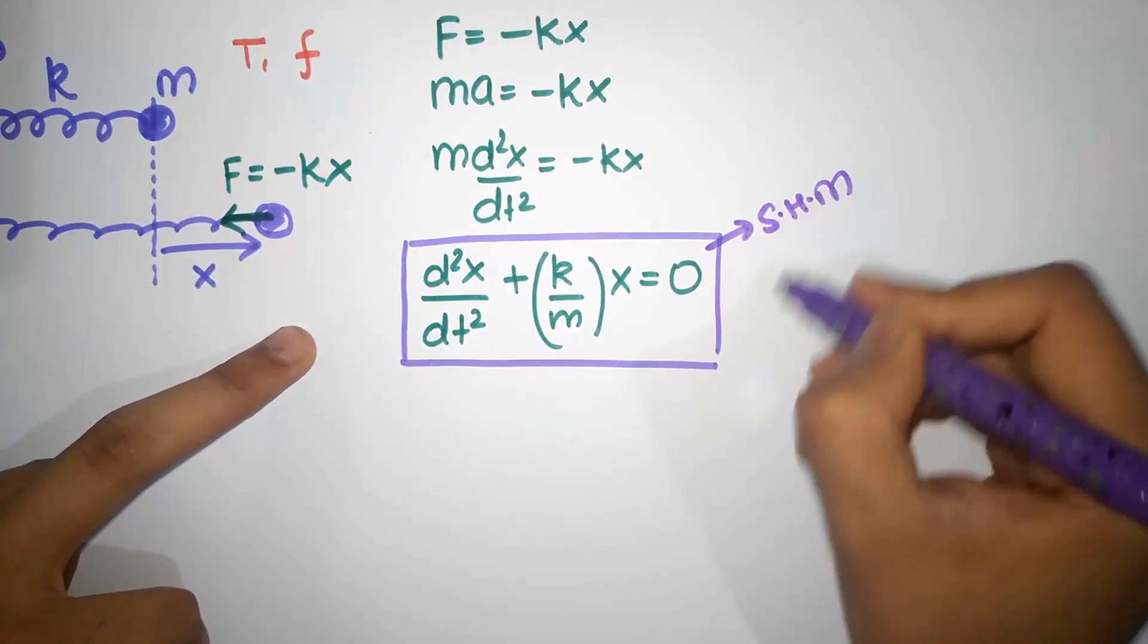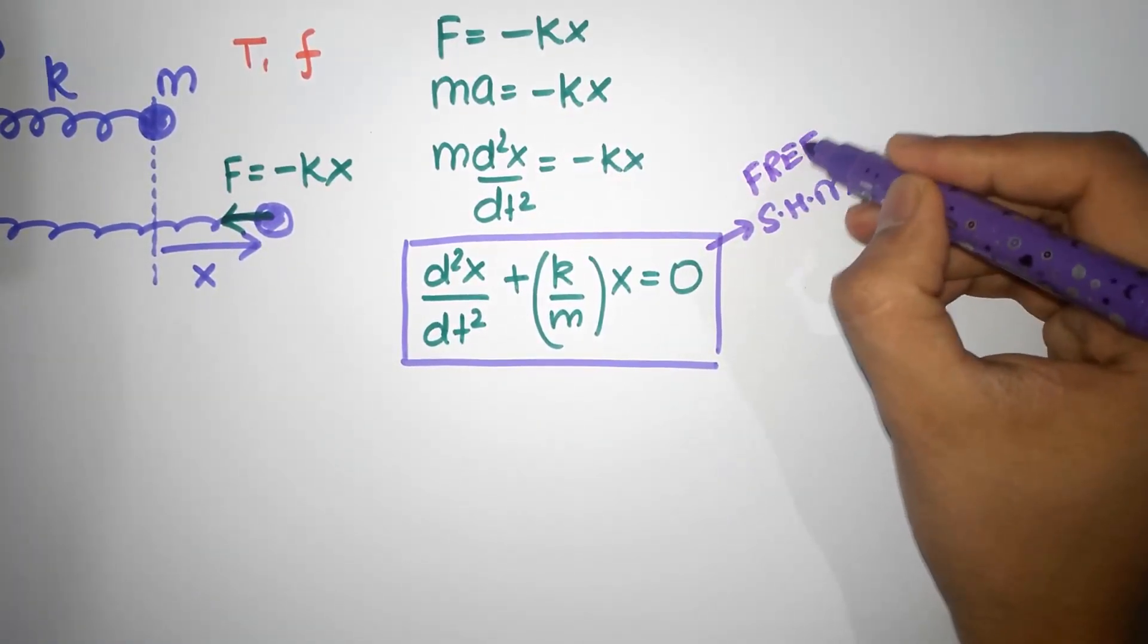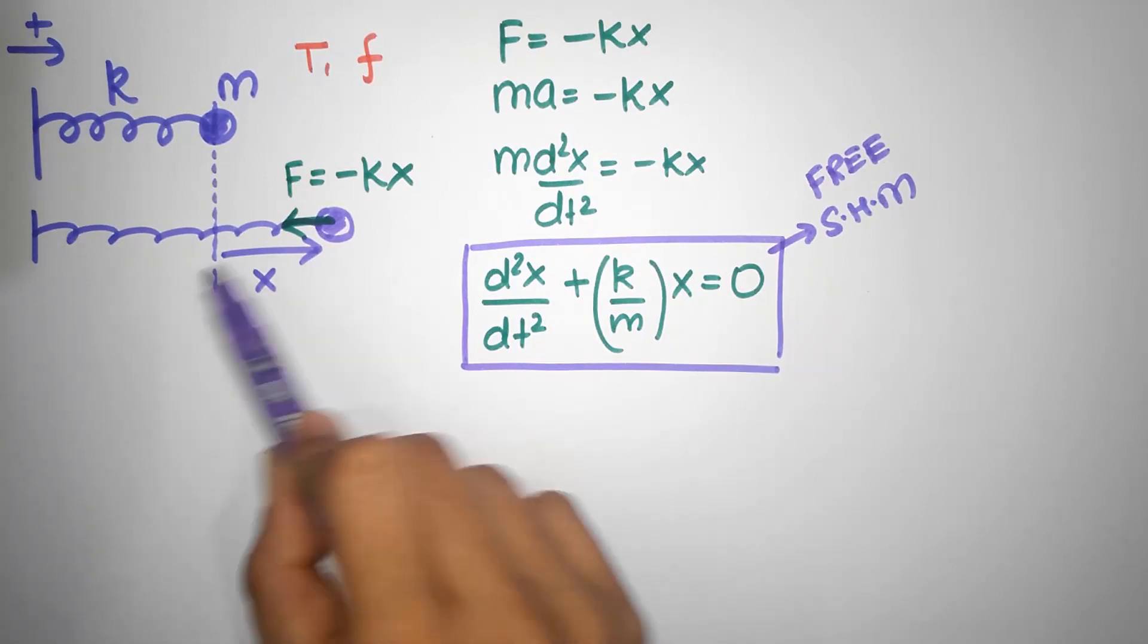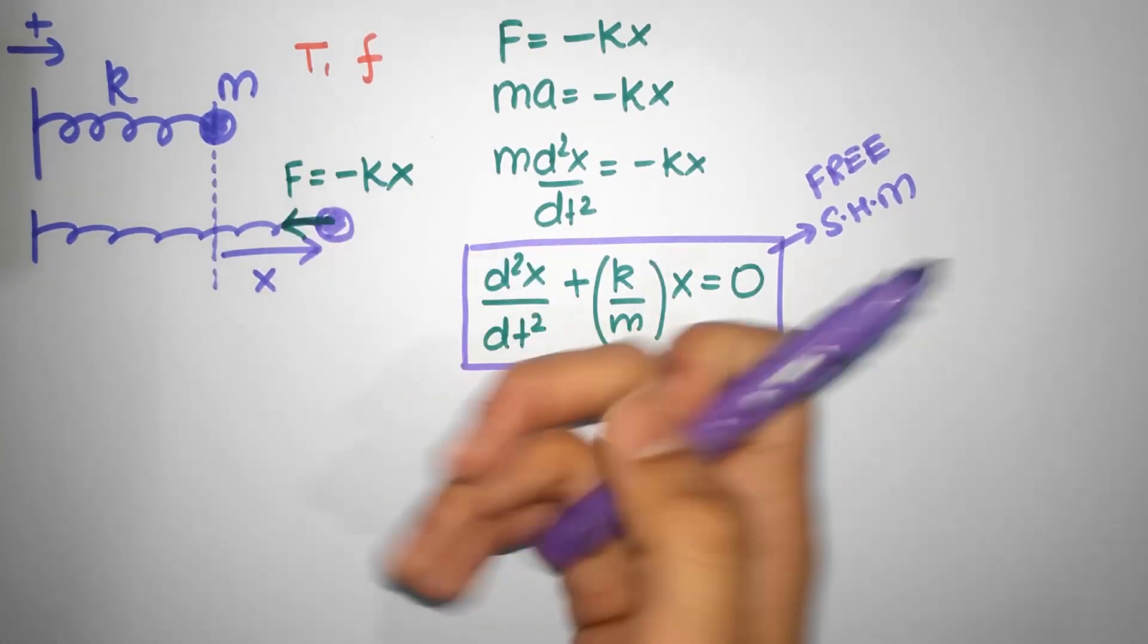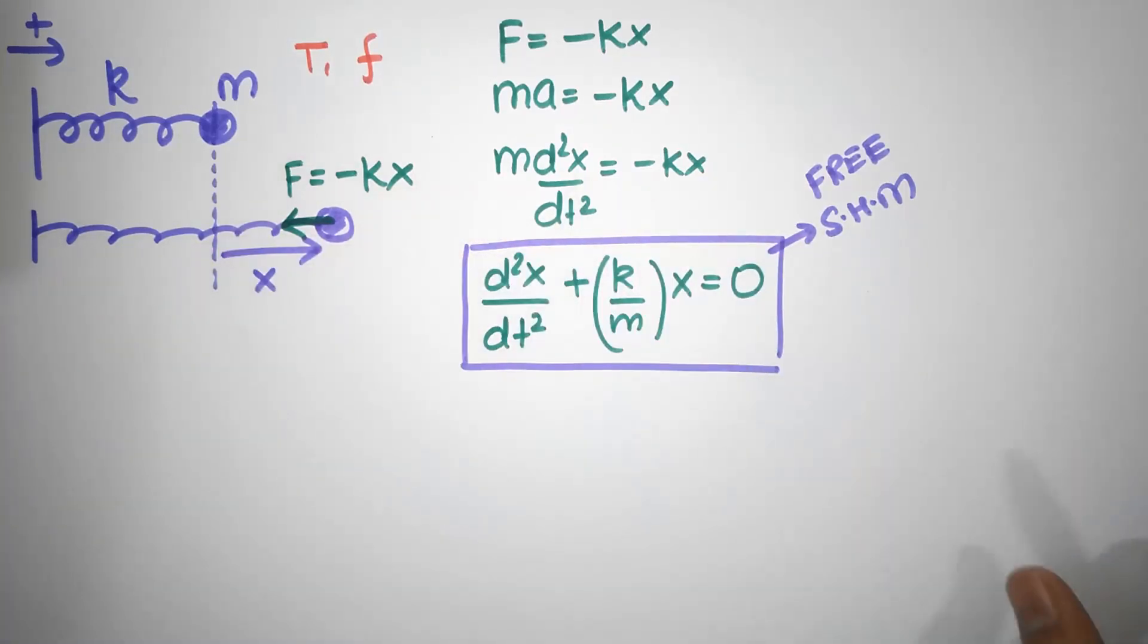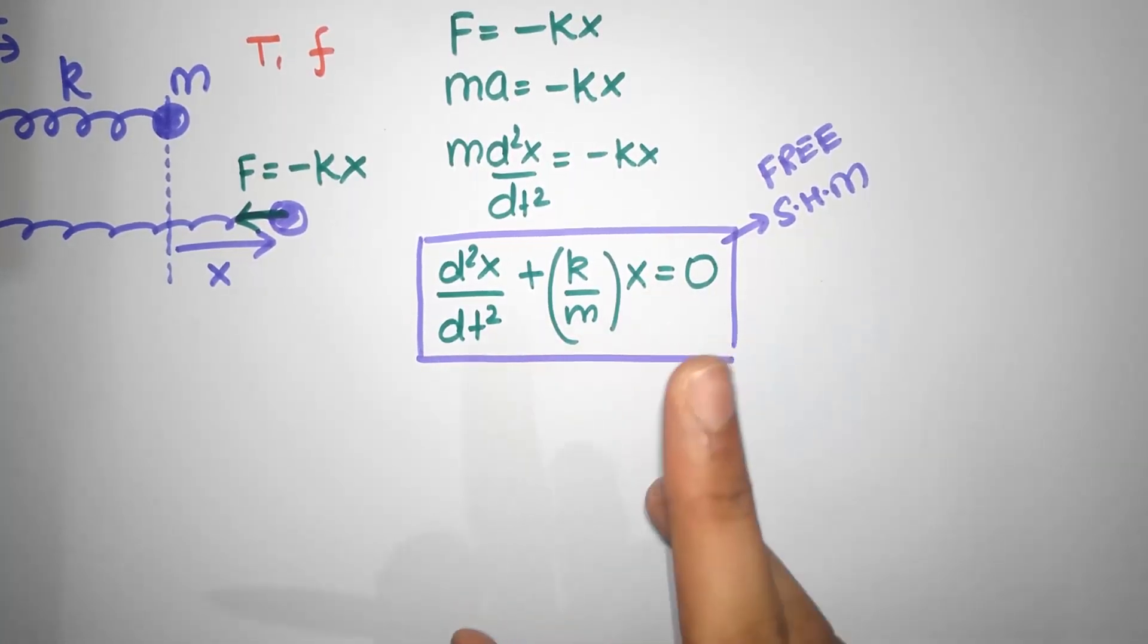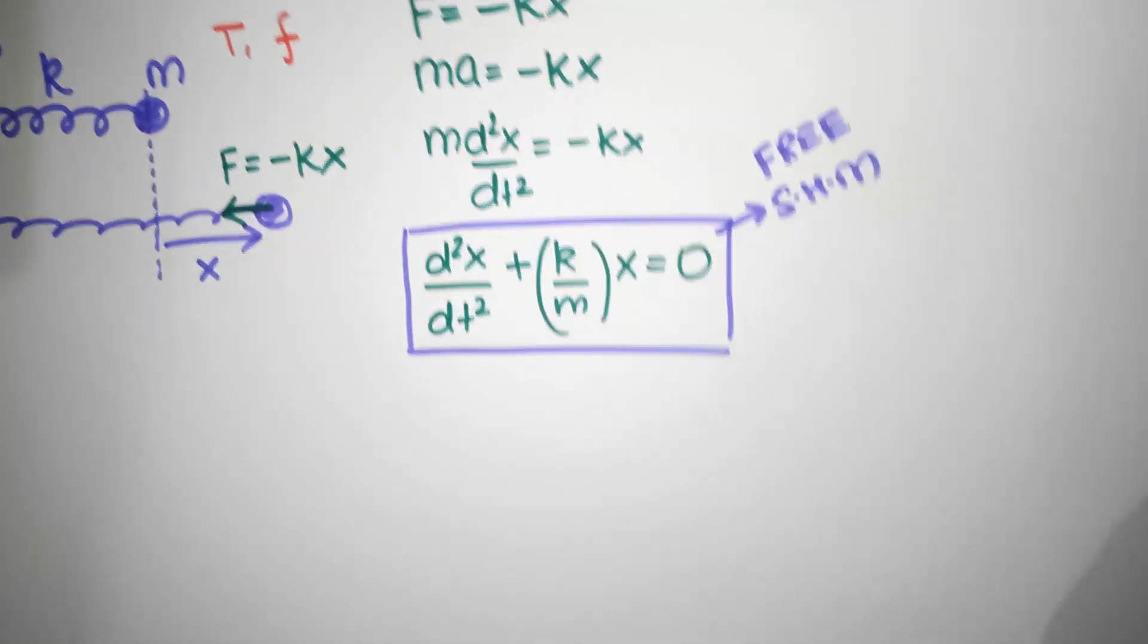This is the differential equation for SHM, or we're going to call this as free SHM. Free SHM means it's not subjected to an external force. So the forces are always within the system, like the spring or the pendulum and stuff like that. But there's no external agency who's going to pull it and do everything. It's all natural. So it's free to oscillate about, free to do its oscillations. This is the equation for free oscillations.